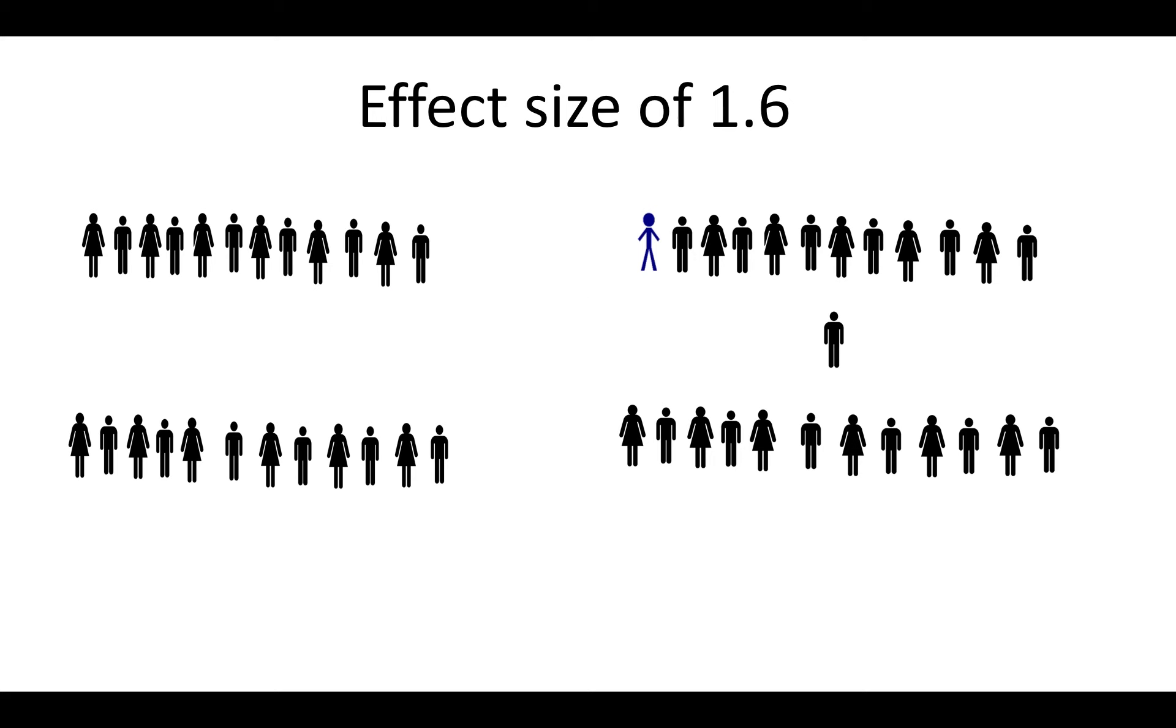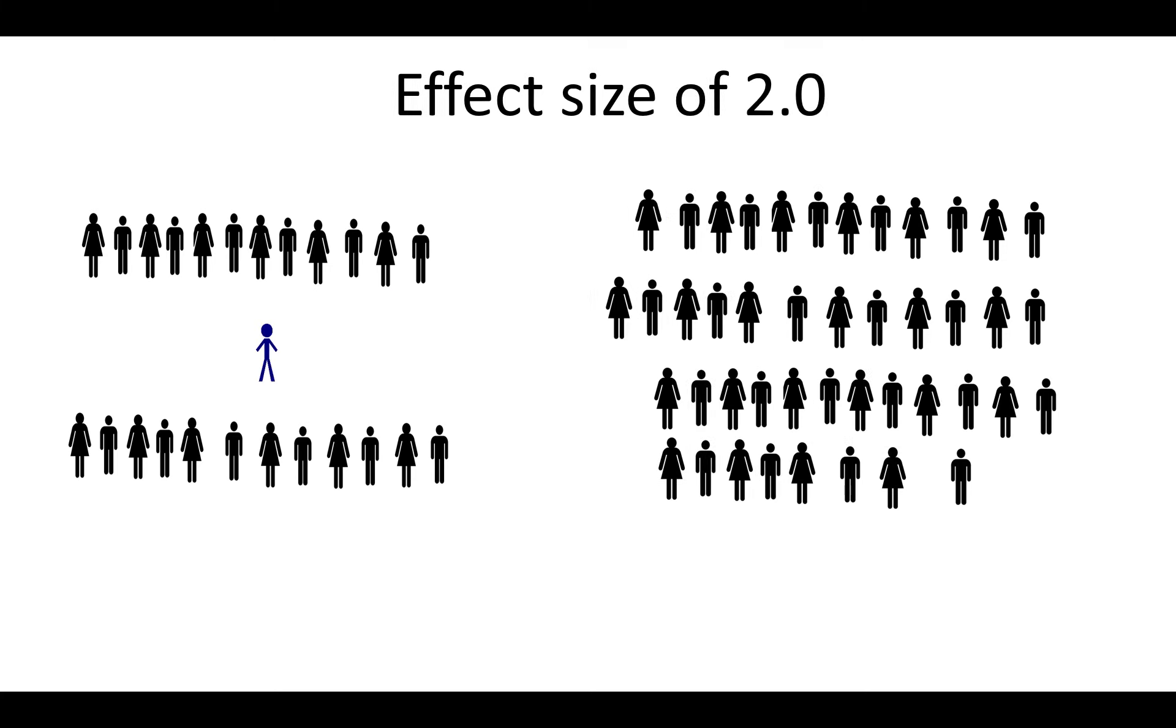An effect size of 2 means that we could take John from his class and place him in a group of 44 peers that did not receive the intervention, and he would still be on top of that group.